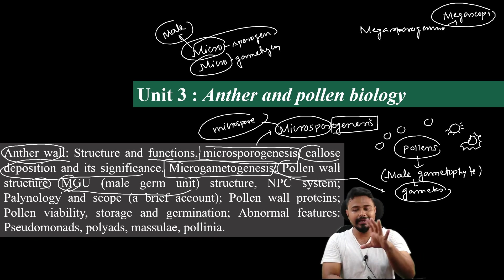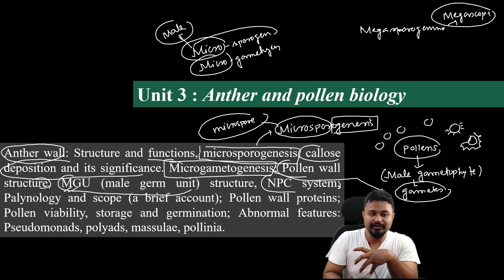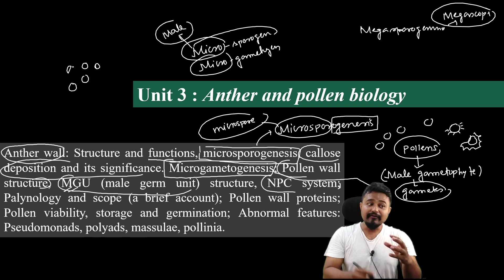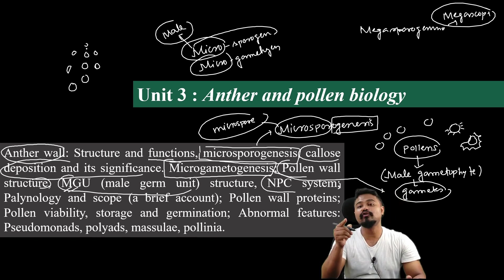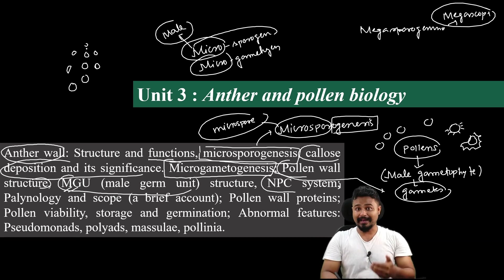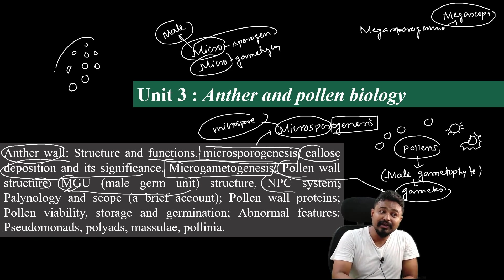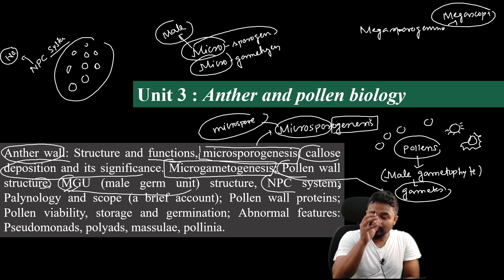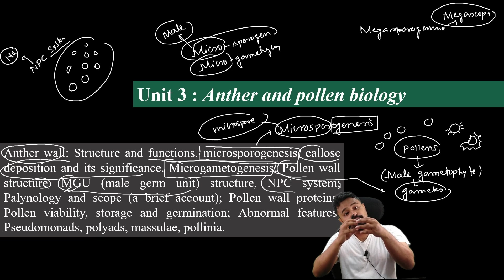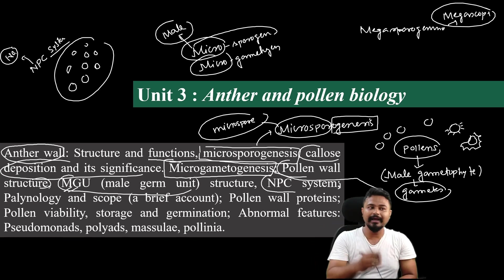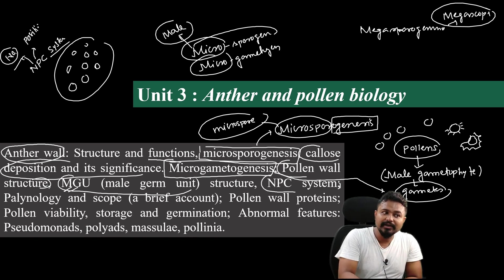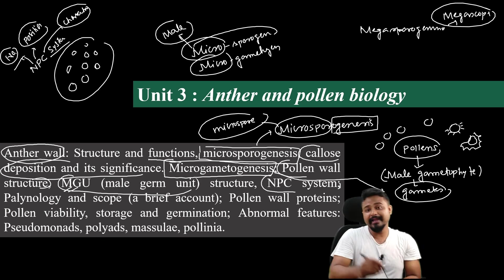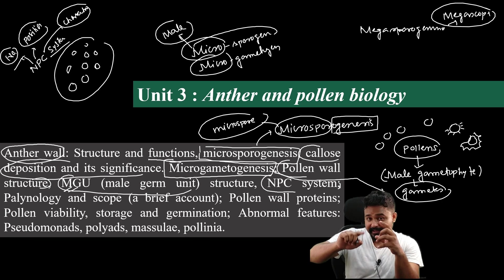The male germ unit is discussed in the context of pollen classification. The NPC system of classification is used for pollen, where there are many variations. NPC means: N = Number of apertures, P = Position of apertures, and C = Character of the aperture. This system is used to classify pollen based on these characters.